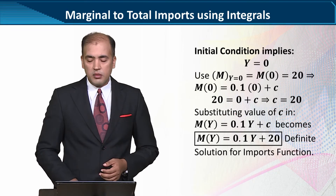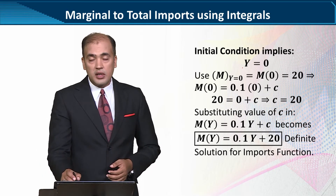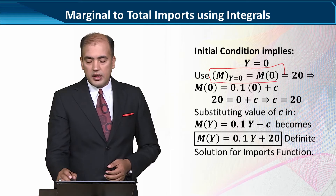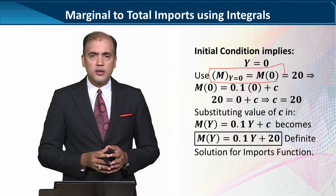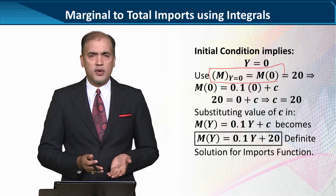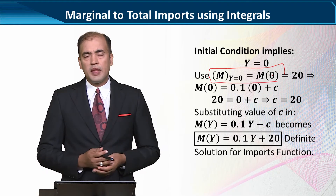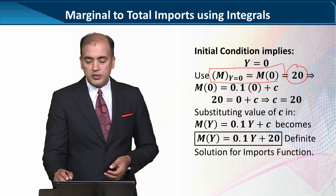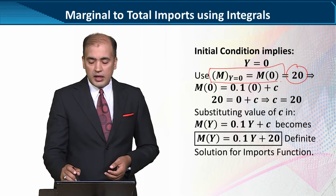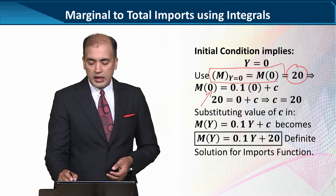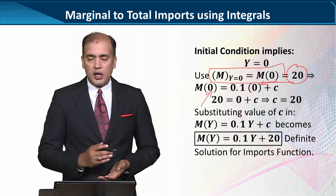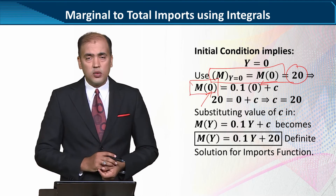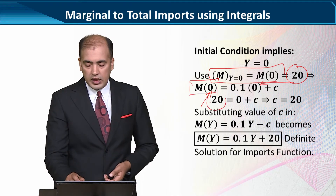We can evaluate the arbitrary constant by using the given condition, which is Y=0. When Y is equal to zero, M — that is the imports — will be 20. So we substitute the values wherever they fit: this is the value of income Y, put at that point, and imports when Y is 0 equals 20, as we were told.